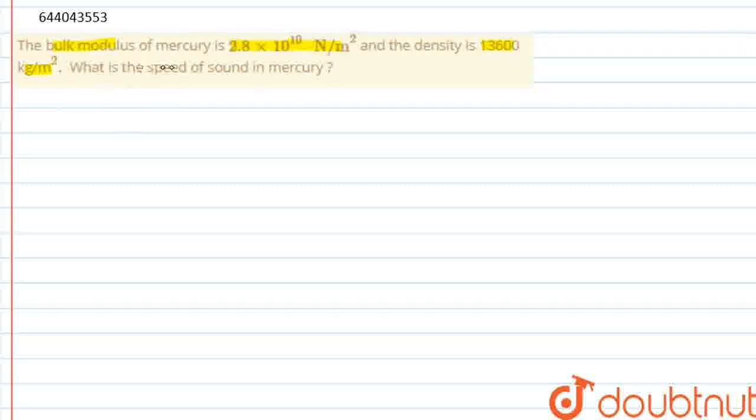So this is the bulk modulus of mercury and the density of mercury. And from this data, we need to calculate the speed of sound in mercury.